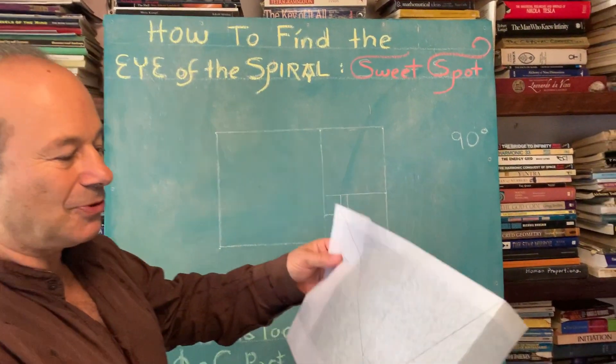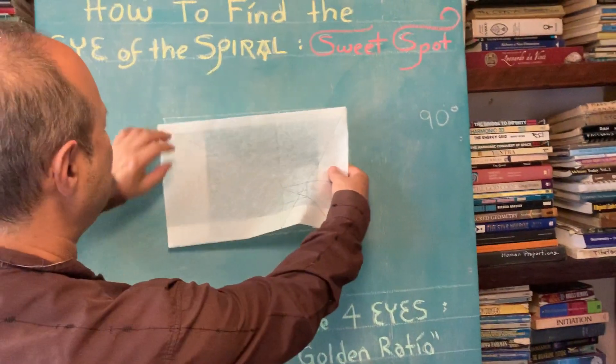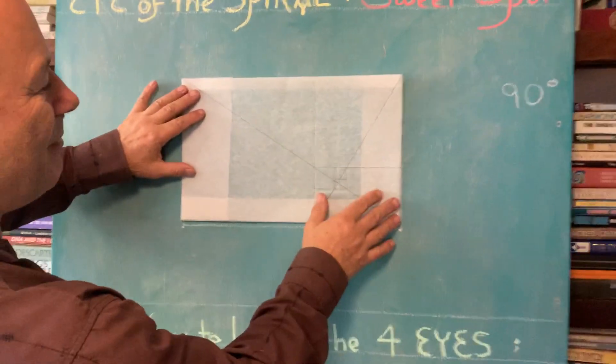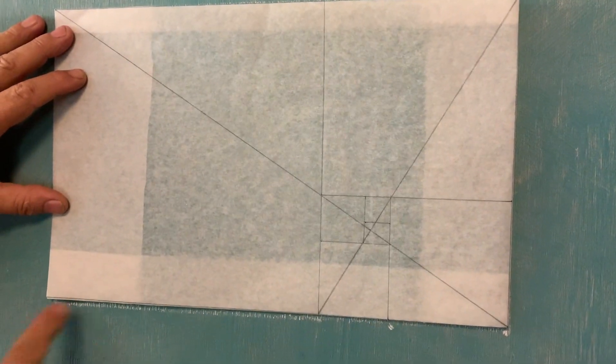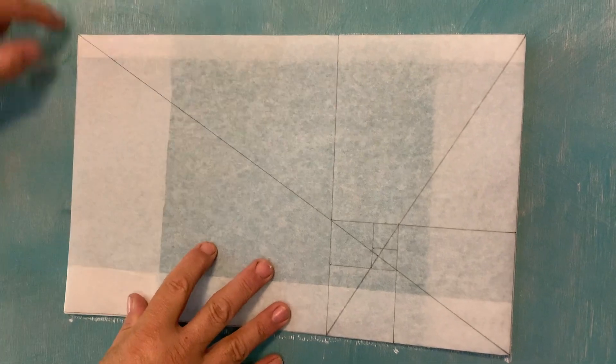First of all, when we want to draw a golden spiral, we need to create a frame. It's called the golden rectangle. You can see here that this long line, if this is 13, this is 8. That's an approximation.